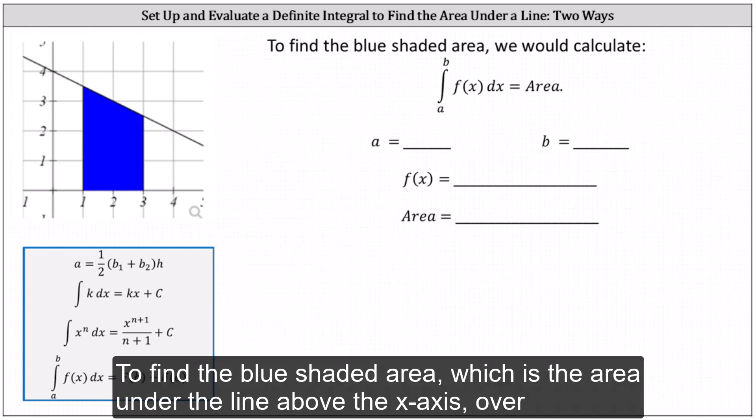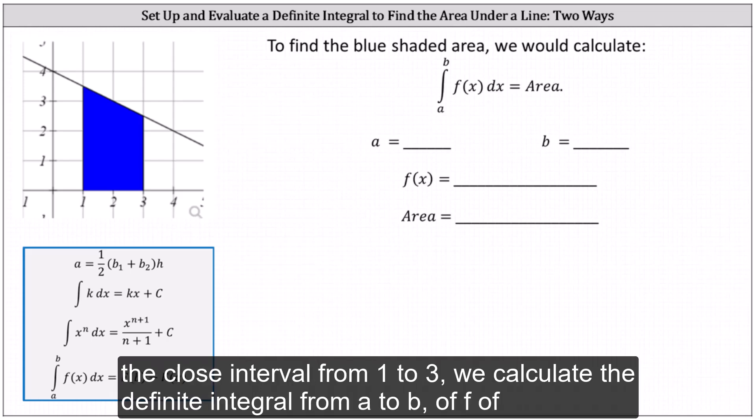To find the blue shaded area, which is the area under the line above the x-axis over the closed interval from one to three, we calculate the definite integral from a to b of f(x) dx.